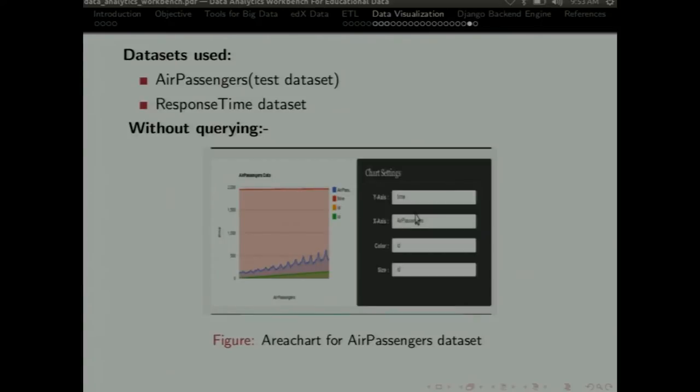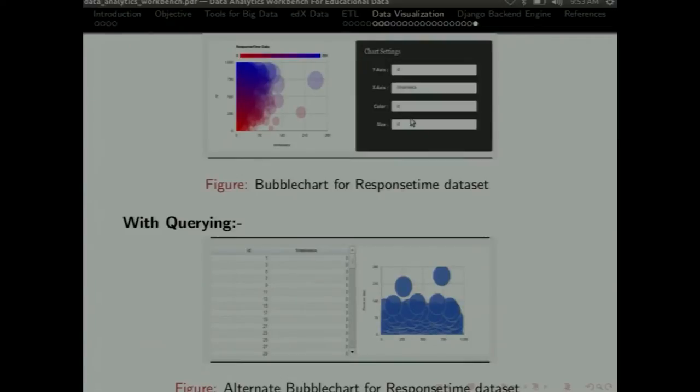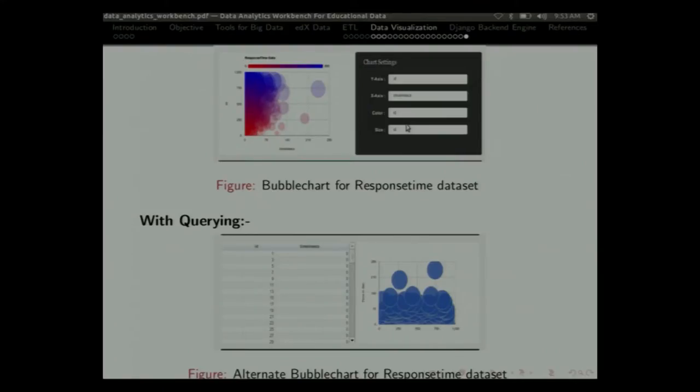As you can see that we tried two kinds of data sets. One was the air passengers, which was the test data set. And the response time data set, which was the data that we got from the quiz that was conducted in the beginning of this intern. So without querying the bubble chart for the response time data set, as you can see above. And the other one with querying you are getting this way. So we have done the querying part using Google charts and we have loaded the data. Now for querying the data to provide the user with an interface where he can query by himself and see the output, we have done it using Django.